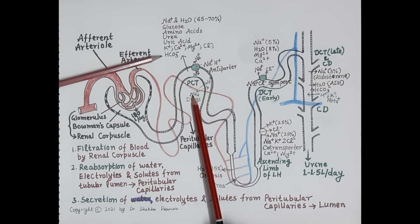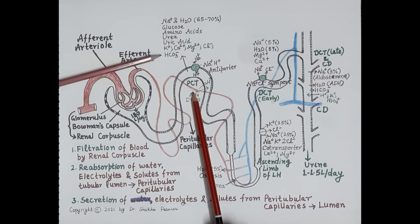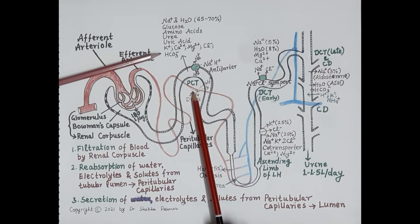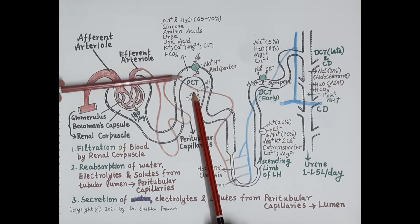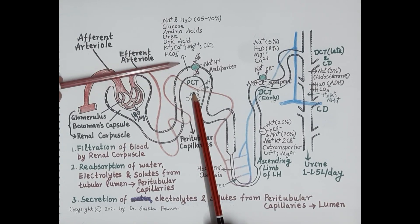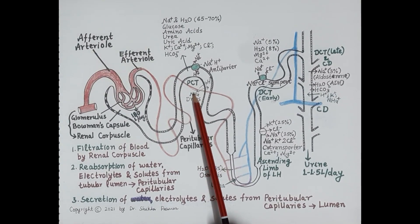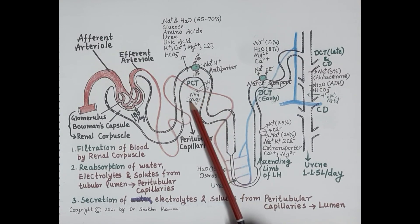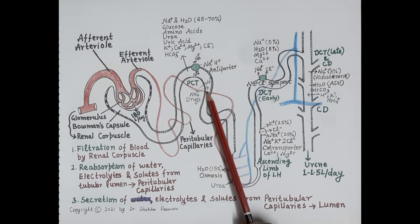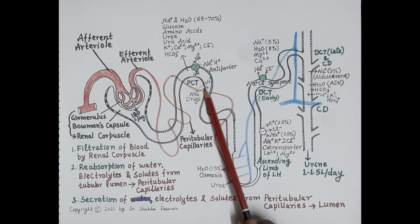Reabsorption of bicarbonate is catalyzed by the enzyme carbonic anhydrase, and this reabsorption is essential for the maintenance of acid-base balance. Reabsorption of solutes from the proximal convoluted tubule into the tubular epithelial cells creates an osmotic gradient, which drives the reabsorption of water into the peritubular capillaries. Apart from this, ammonium ions, hydrogen ions, and certain drugs are also secreted from the peritubular capillaries into the lumen of the proximal convoluted tubule.